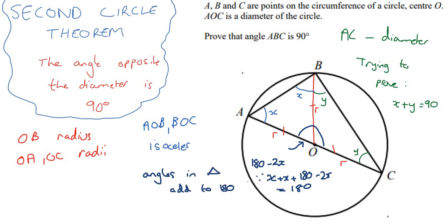So this angle here is 180 take away 2X. And of course, that means that this angle here is 180 take away 2Y, because Y plus Y plus 180 minus 2Y is 180.